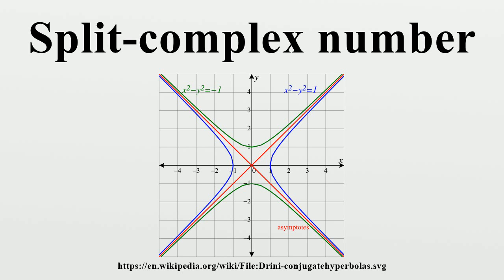Namely, they form a Clifford algebra over a one-dimensional vector space with a positive definite quadratic form. Contrast this with the complex numbers which form a Clifford algebra over a one-dimensional vector space with a negative definite quadratic form.